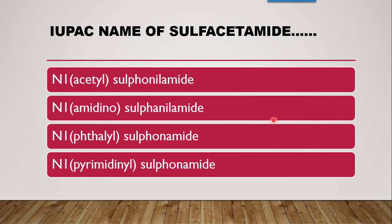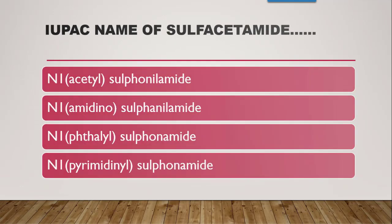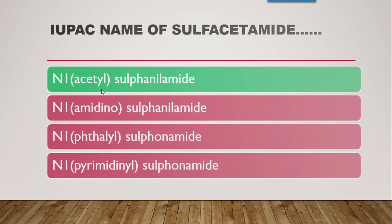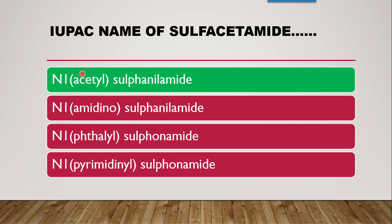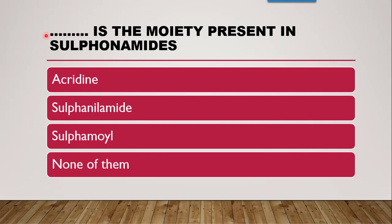The IUPAC name of sulfacetamide — all four options are N1 derivatives since it is an N1-substituted sulfonamide. Sulfacetamide contains an acetyl group. The correct answer reflects the presence of an acetyl group on the sulfanilamide moiety at the N1 position.